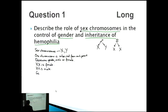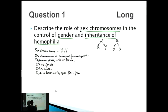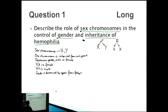Gender is determined by the sperm from the father, because the sperm from the father could be either X or Y. So right now we've talked about sex chromosomes and gender, and the final thing we need to talk about is the inheritance of haemophilia.